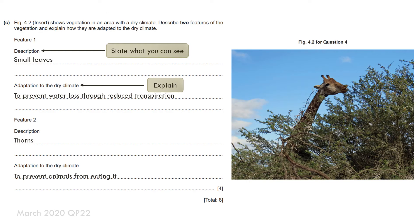A common question type is: describe features of the vegetation and explain how they are adapted to the dry climate. It could also be a tropical rainforest. In your notes, cover a range of features such as small leaves, thorns, whether it is a cactus, and what the roots are doing. For example, small leaves prevent water loss through reduced transpiration. Have a range of clear examples to access all the marks.